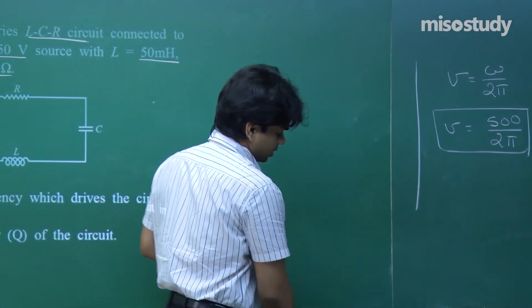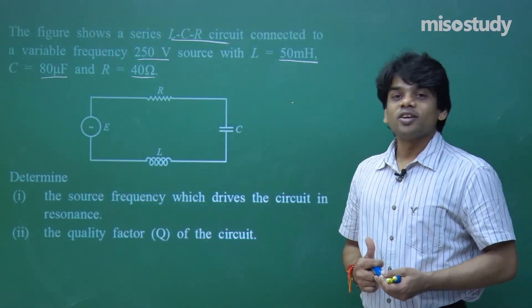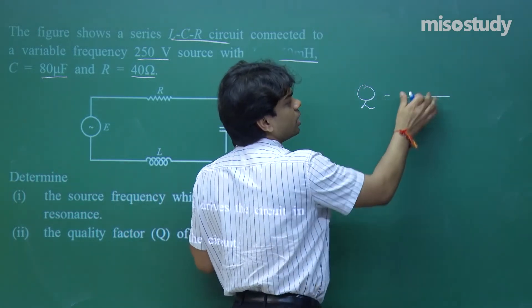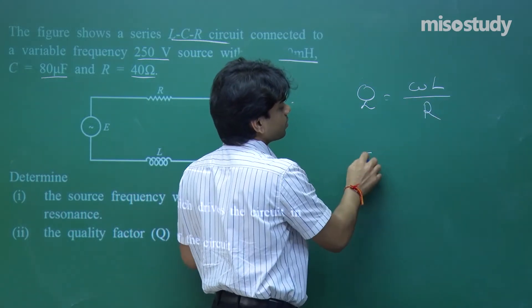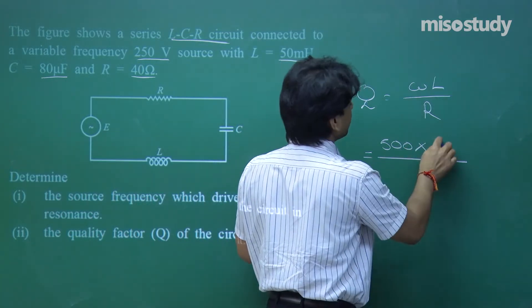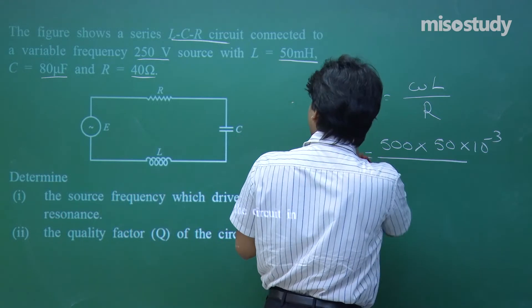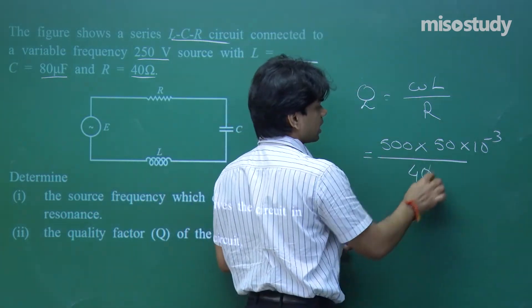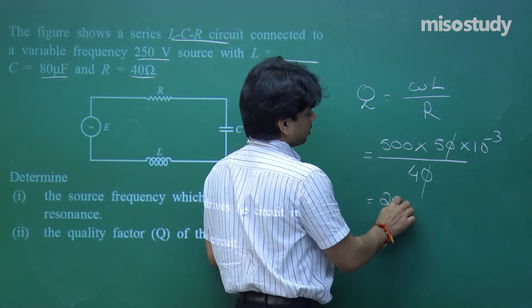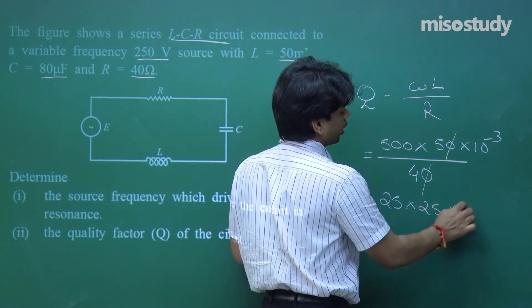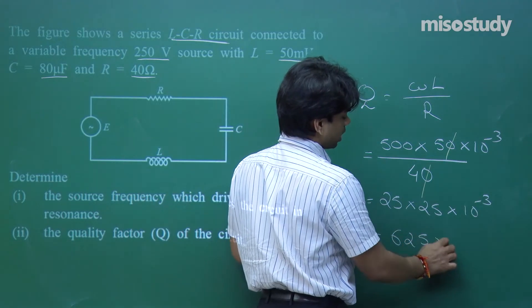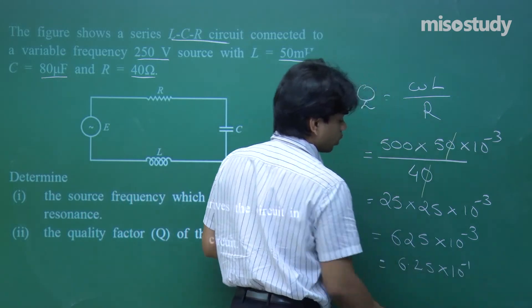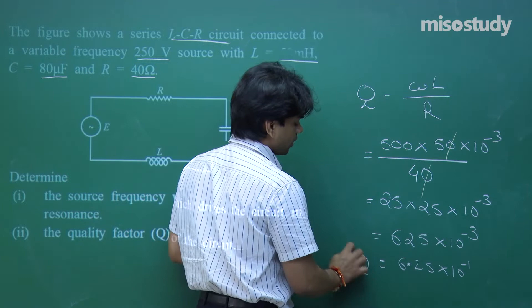For the second part — the quality factor Q of the circuit. We already know Q = ωL/R. With ω = 500, L = 50×10⁻³, and R = 40 Ω: Q = (500 × 50×10⁻³)/40 = 25/40 = 625×10⁻³ = 6.25×10⁻¹. There is no unit of quality factor. That is the answer for the value of quality factor.